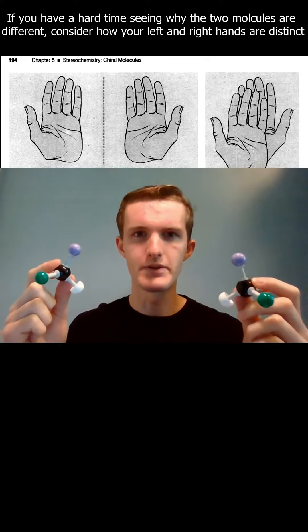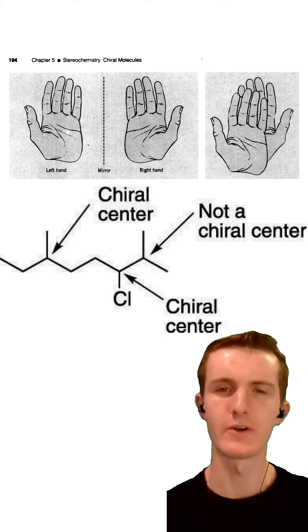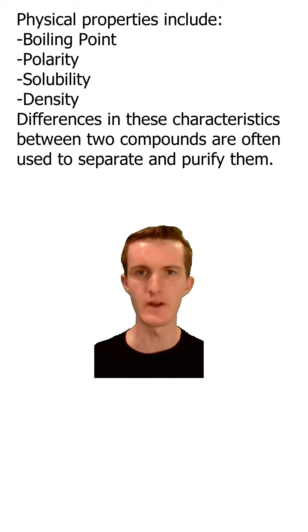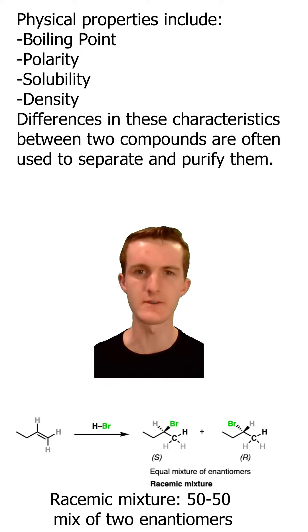You get chiral centers anywhere you have a carbon with four distinct groups attached to it. Usually we see this in organic molecules. Enantiomers have identical physical properties to one another, and the pathways to make them often aren't selective — they make racemic mixtures.